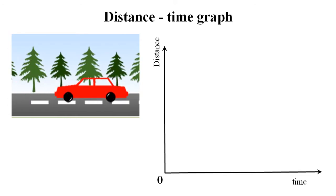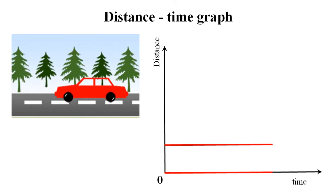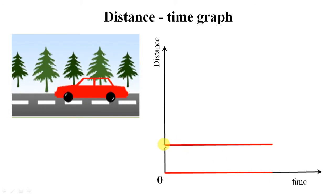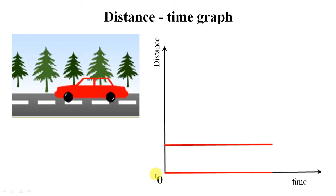Let's analyze these two horizontal straight lines. If you observe, both lines are flat. The distance covered by these bodies does not change with time — it's a flat line, which means even if you wait for one hour there is no change in the distance covered by the body.